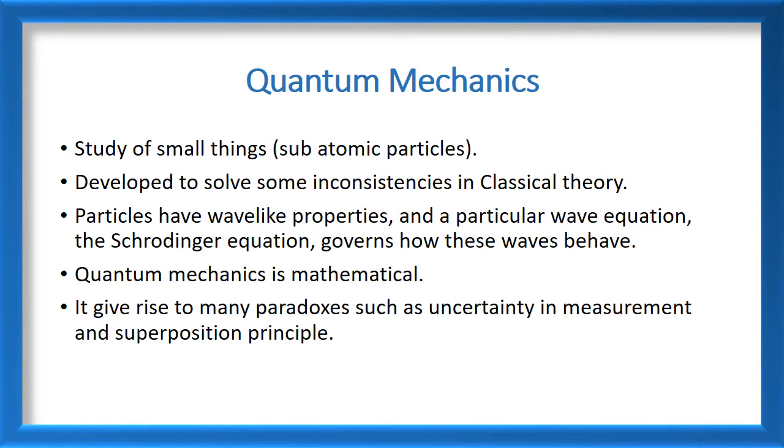Quantum mechanics is the study of subatomic particles like electrons, protons, atoms, nuclei, etc. This was developed to solve some inconsistencies which occurred in classical theory. In quantum mechanics, particles behave like waves, so they have a wave equation. And these wave equations are governed by Schrödinger equations. Quantum mechanics is purely mathematical. We do all the formulations with the help of mathematics. And of course, we have evidences to prove that our mathematical techniques were correct. Quantum mechanics gives rise to many paradoxes such as uncertainty in measurement, that is uncertainty principle, or the superposition principle which you hear as Schrödinger's cat.